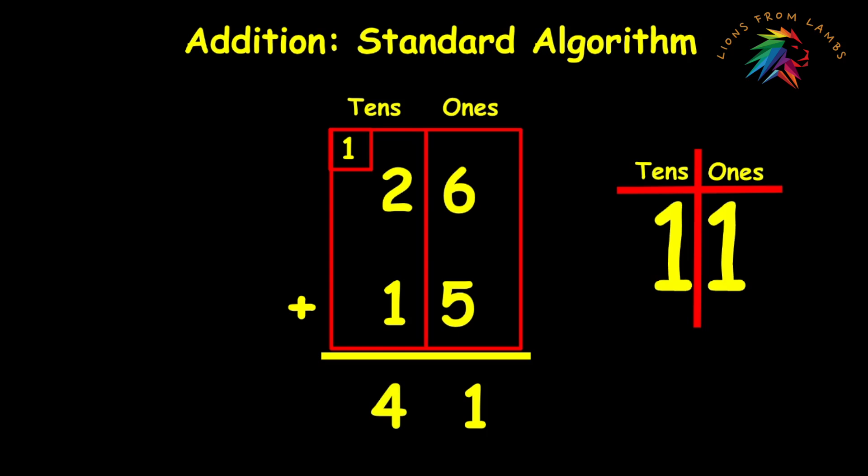The one major thing kids struggle with, and it's just a matter of practice, is they forget to add that one that they've regrouped. So a lot of kids will typically get, as an answer to this problem using the standard algorithm, they'll get 31 instead of 41. But that can be corrected over time with practice and guidance. That's why you want to always be involved with your kids when they're doing these problems, so that you can see it and get that little redirection. And again, repetition is the mother of skill. With practice, practice, practice, it sticks.